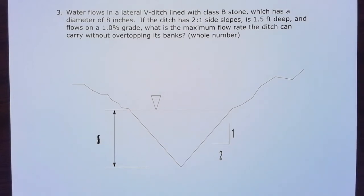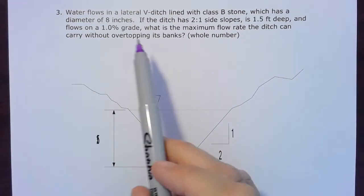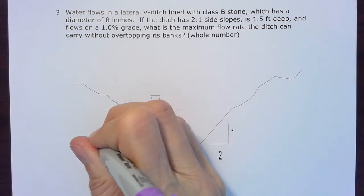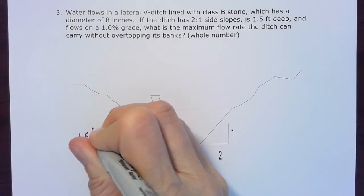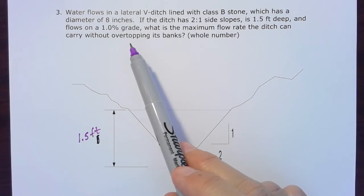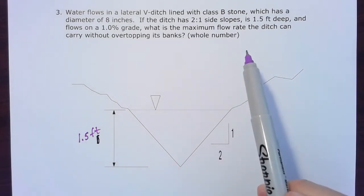For chapter four homework problem three, we have water flowing in a lateral V-ditch with class B stone, which has a diameter of eight inches. The ditch has two to one side slopes, is one and a half feet deep, and flows on a one percent grade. We want to know the maximum flow rate the ditch can carry without overtopping its banks, so we're looking for Q.